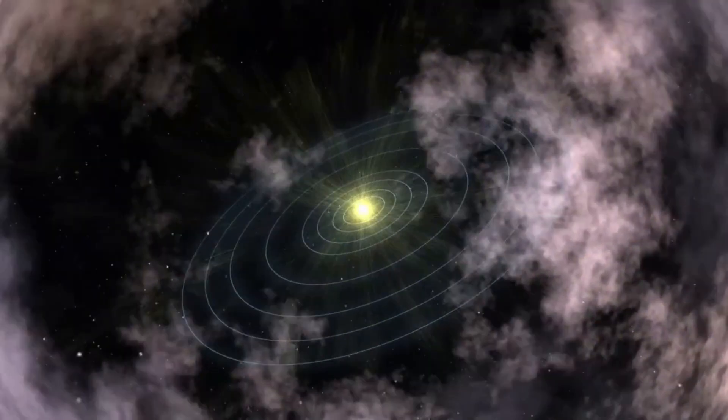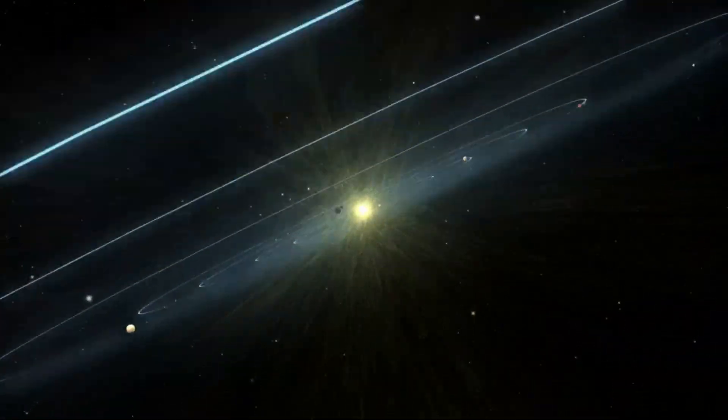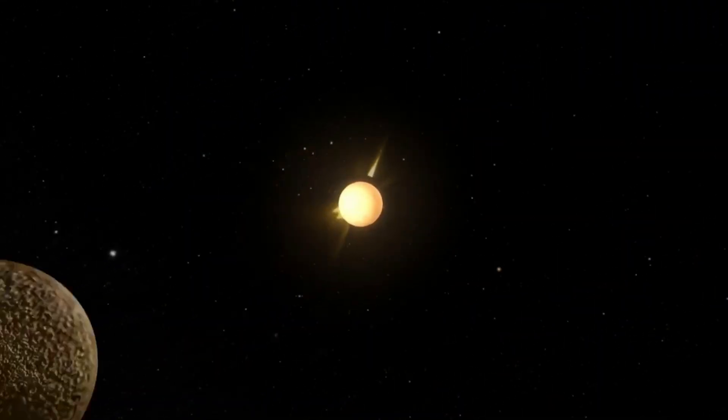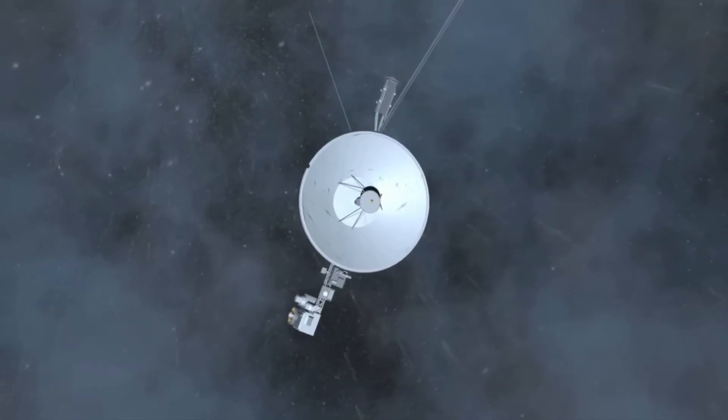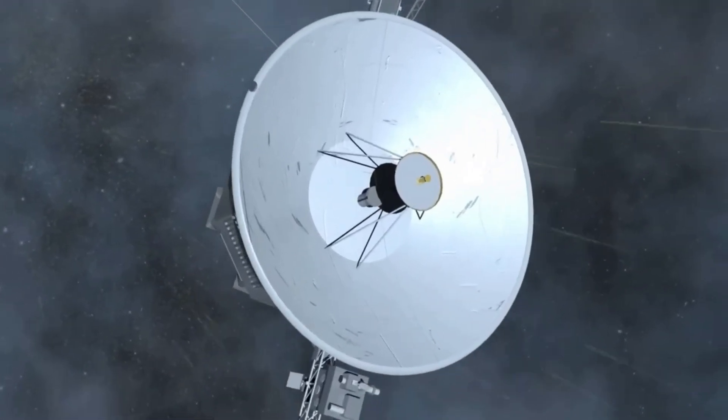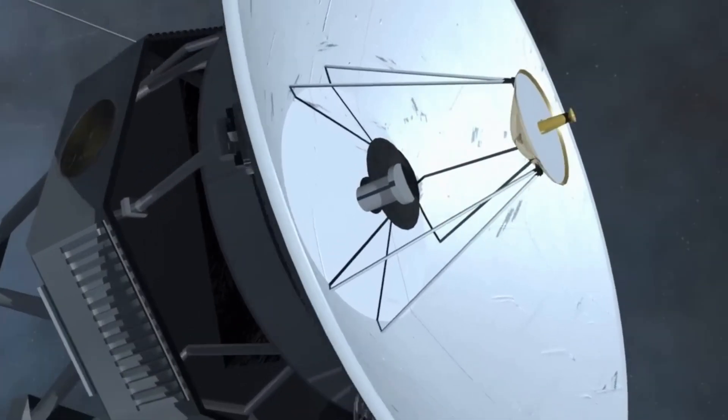Just yesterday, NASA was able to re-establish communication with Voyager 2 after command shifted the spacecraft's antenna away from Earth. After around 37 hours of travel time, the message was sent to and received from the spacecraft. We will have to wait and see how it progresses and the impact it has on the space industry. Thank you very much for watching.